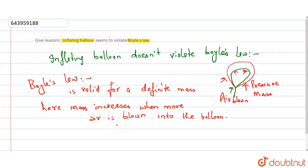So the mass increases when air is blown. So it doesn't violate Boyle's law. Boyle's law is valid for a definite mass. When mass is increasing, the pressure and mass will increase. So it does follow Boyle's law and doesn't violate.